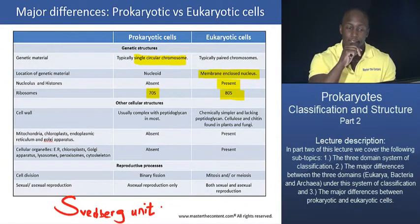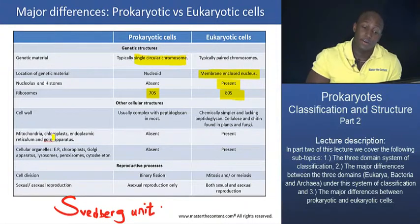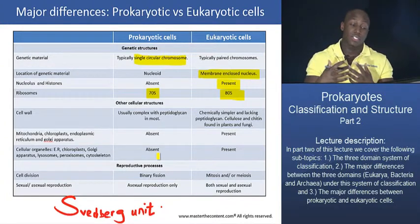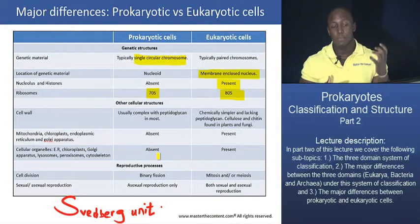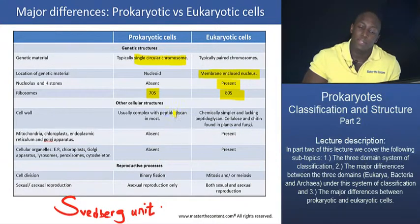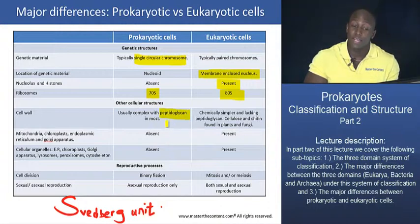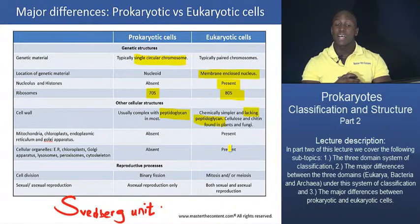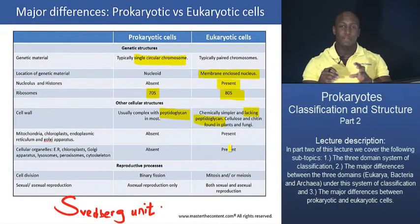That summarizes the genetic structure differences. What about other cellular structures? As far as the cell wall is concerned, prokaryotes usually have complex cell walls with additional structures and contain a compound called peptidoglycan. Eukaryotic cells have relatively simpler cell walls and do not contain peptidoglycan. Examples of eukaryotic cell wall materials include cellulose in plant cells and chitin in fungal cells. The presence of peptidoglycan in prokaryotic cell walls and its absence in eukaryotic cell walls is a key distinction.